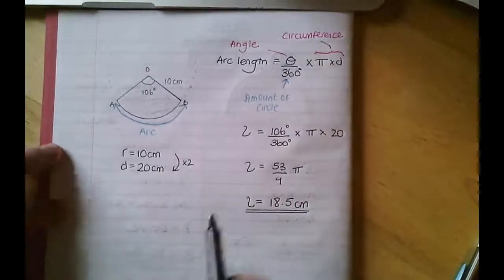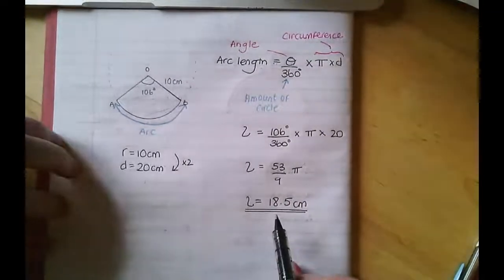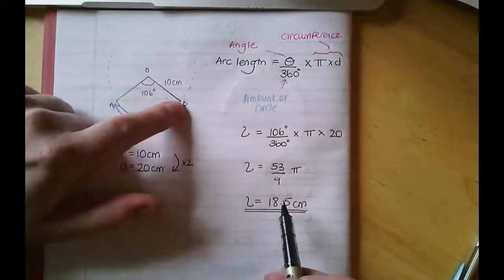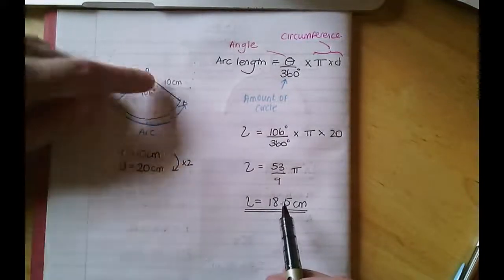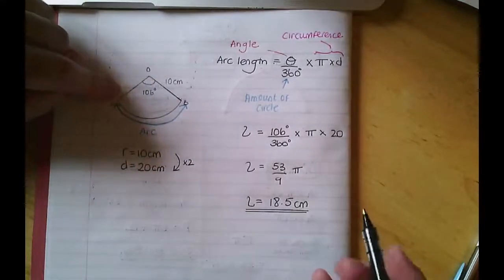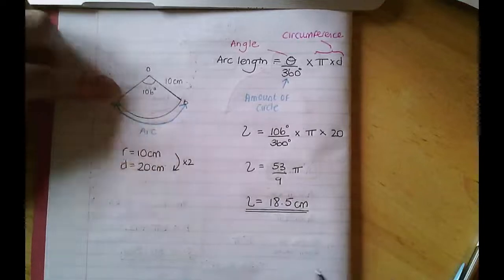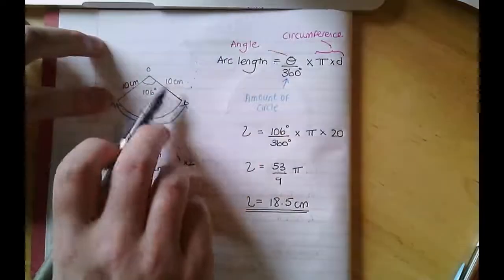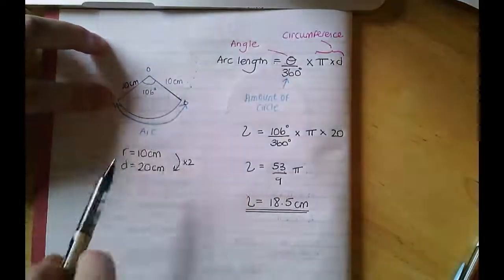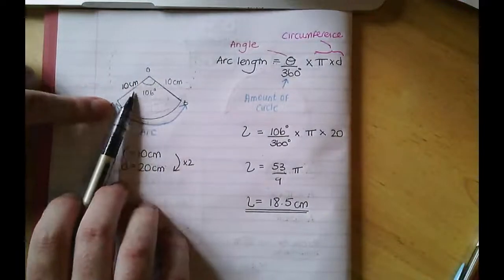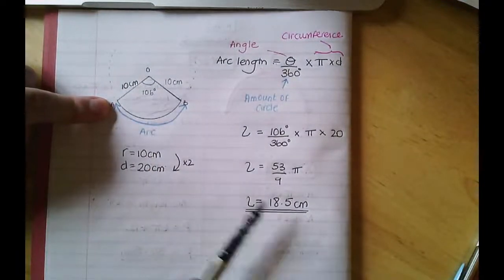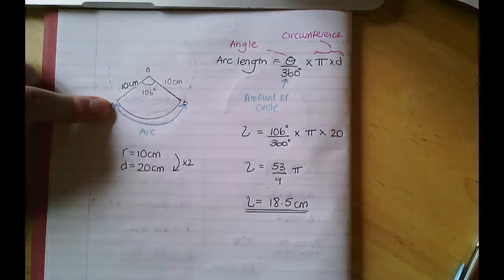If you're asked for the perimeter of that sector, you take your arc length and add the two radii. Both radii are 10 centimetres, so the perimeter of the sector is 18.5 plus 10 plus 10, which is 38.5 centimetres.